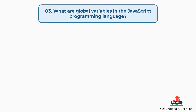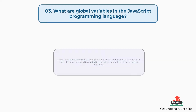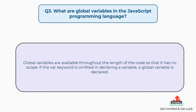Question number three: what are global variables in JavaScript? Global variables are available throughout the length of the code so that it has no scope. If the var keyword is omitted in declaring a variable, a global variable is declared.